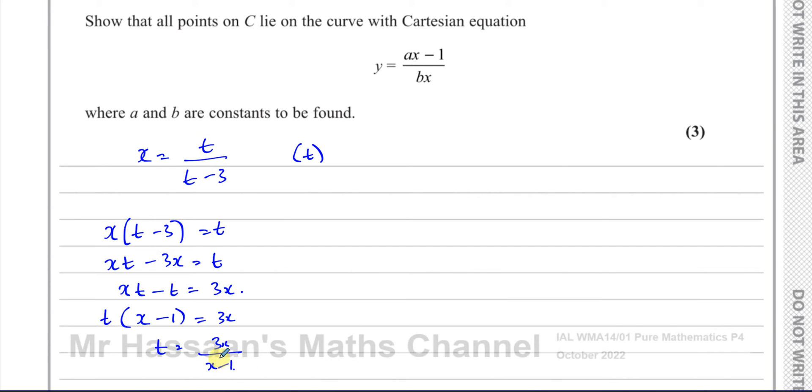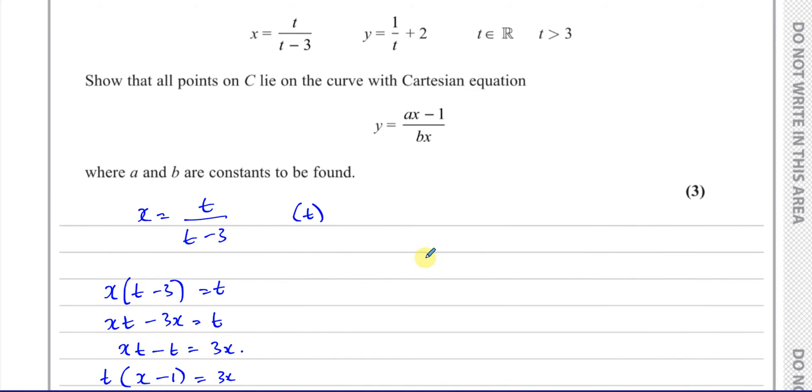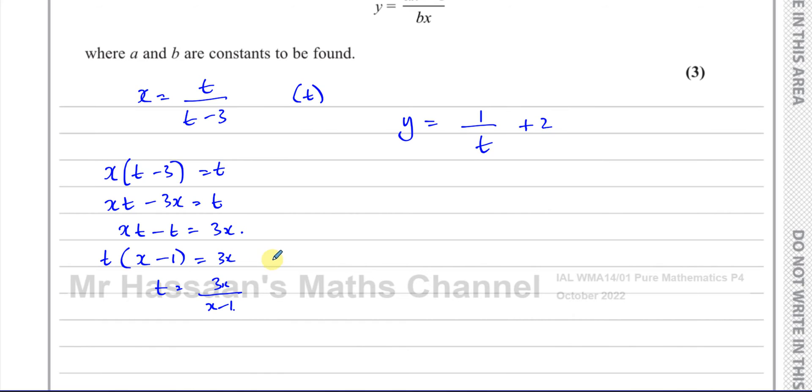So I've made t the subject of this formula and what I can do now is take that and replace it inside this equation. So I have y equals 1 over t plus 2. So 1 over t means the reciprocal of t. So I can rewrite this as x minus 1 over 3x plus 2, because 1 over t is basically the reciprocal of t.